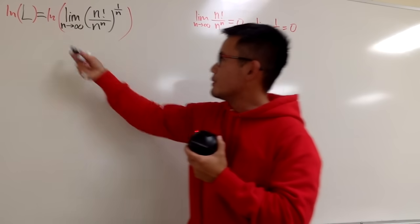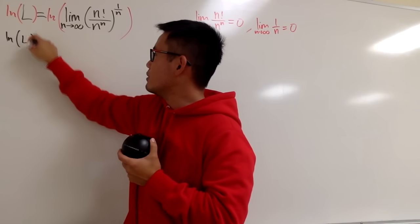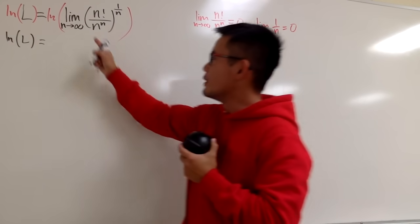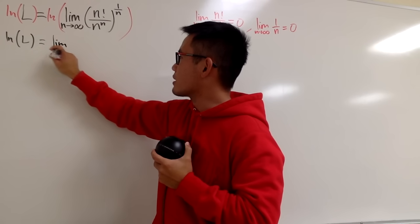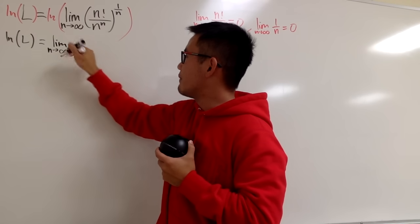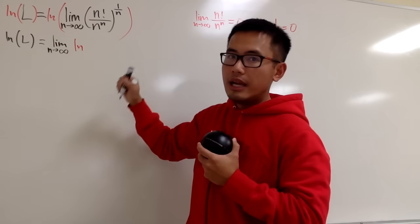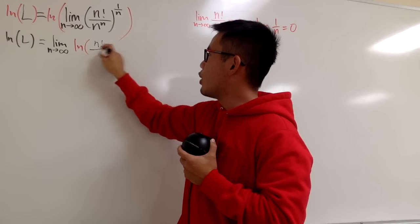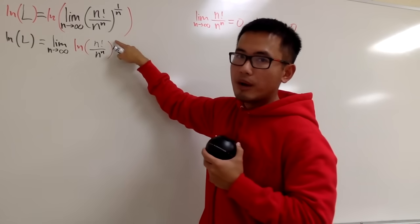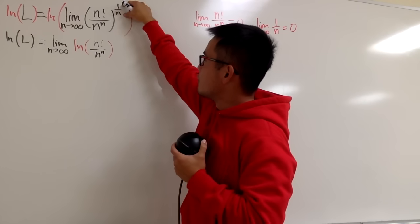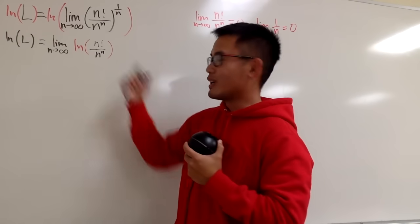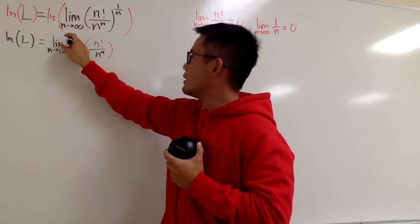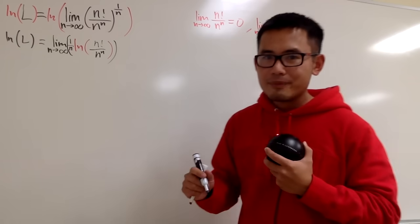On the left-hand side we just have the natural log of L. This is the natural log of the limit, and because natural log is a continuous function, we can say this is the same as the limit of the natural log — so I can take the limit outside. Then we have the natural log of n factorial over n to the n, raised to the 1 over n power. We can bring the 1 over n to the front — that's the point of doing the natural log — so this becomes 1 over n multiplied by the natural log.